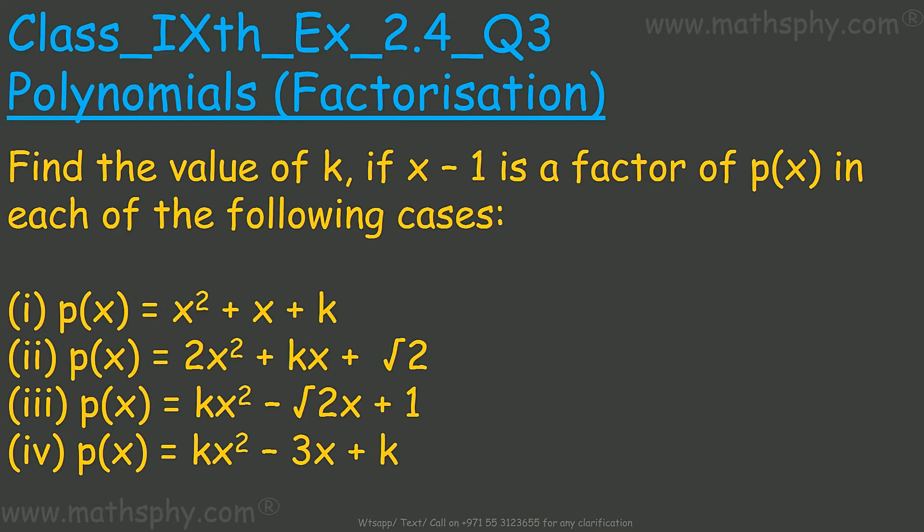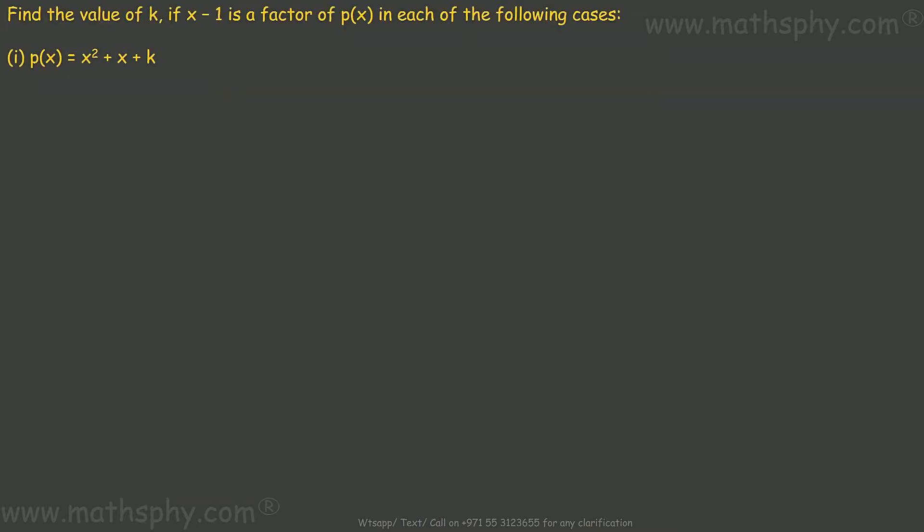Find the value of k if x minus 1 is a factor of all these polynomials. Now if x minus 1 is one of the factors for this polynomial, it means if I replace x with the zero of this polynomial, this will leave no remainder. X minus 1 equals 0, so x is 1. It means this is a zero for this polynomial.